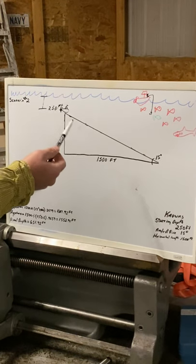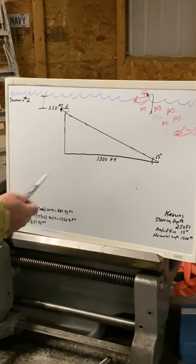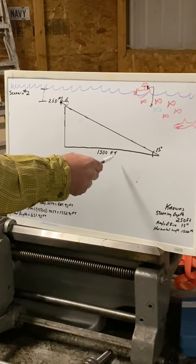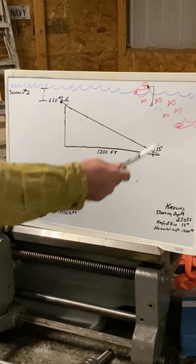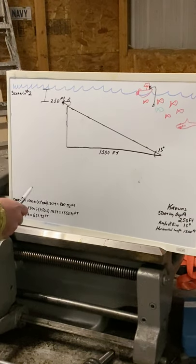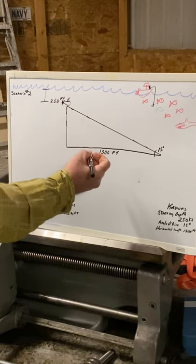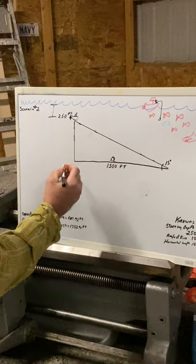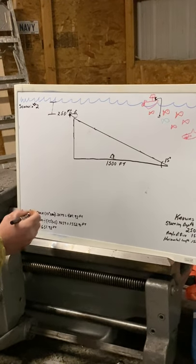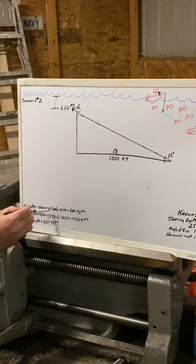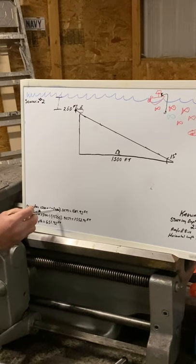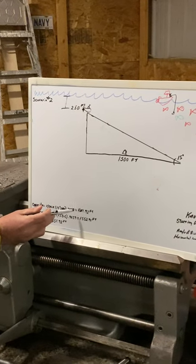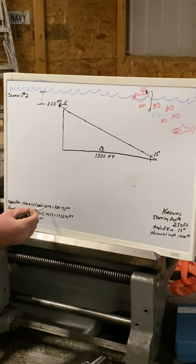So what I had to do was I took my knowns of 1,500 feet and 15 degrees. To find my opposite side, you take your adjacent side and multiply it by the tangent of 15 degrees, which gave me 0.2679. So 1,500 times 0.2679...